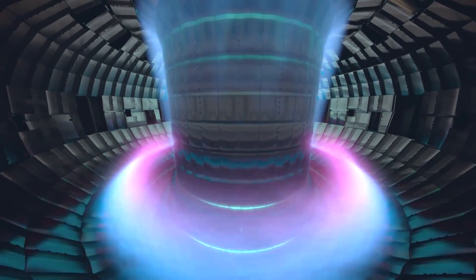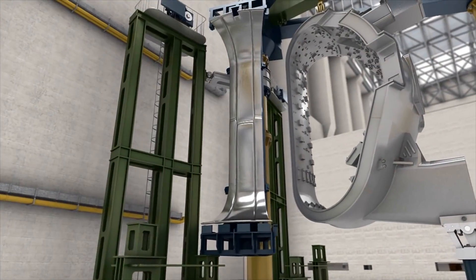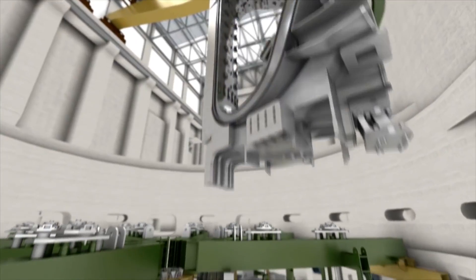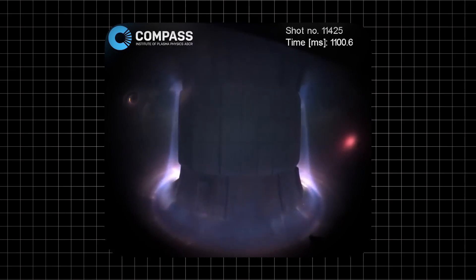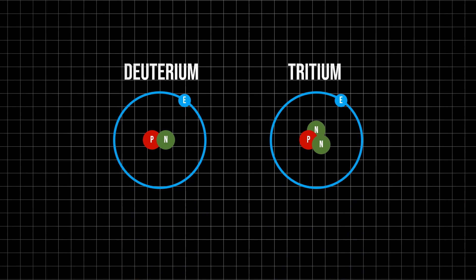The plasma is confined into this shape using powerful superconducting magnets, which prevent it from burning the walls of the reactor. Inside the plasma, the best fuel mix is generally a blend of deuterium and tritium, which are special forms of hydrogen known as isotopes.